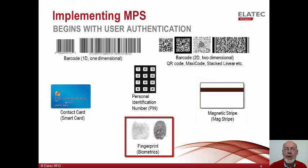Biometrics — fingerprint or palm print — can also be used for authentication. But since they are not 100% accurate, they are often best combined with another technology, like PIN, which upgrades security to two-factor authentication: something you have and something you know.